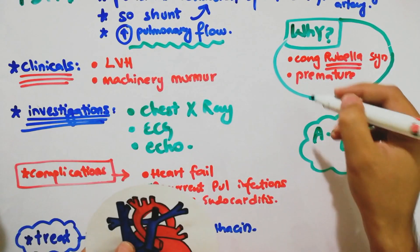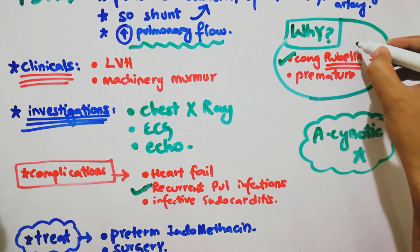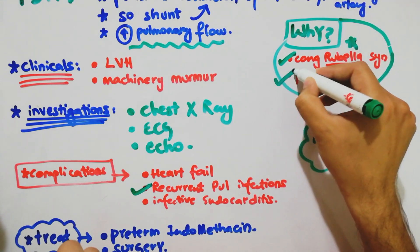The association is mainly congenital rubella syndrome. Rubella infections can cause this, or prematurity where the ductus is not closed.